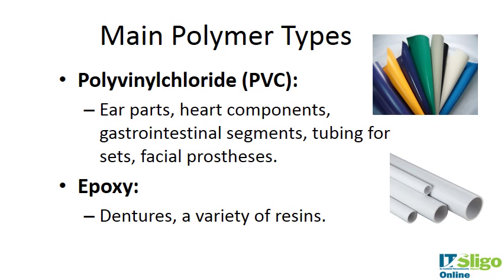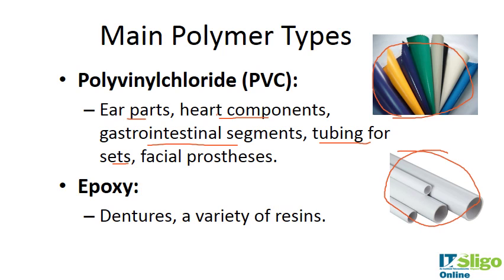PVCs are the next type. We've mentioned them already in relation to catheters. They're very much used for tubing and gastrointestinal segments due to their flexibility. We know PVCs from off-the-shelf products — they're found in clothing and various tubing we are familiar with.